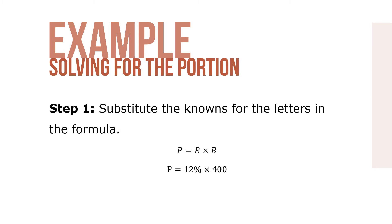Step 1. Substitute the knowns for the letters in the formula. P equals R times B, so P equals 12% times 400.